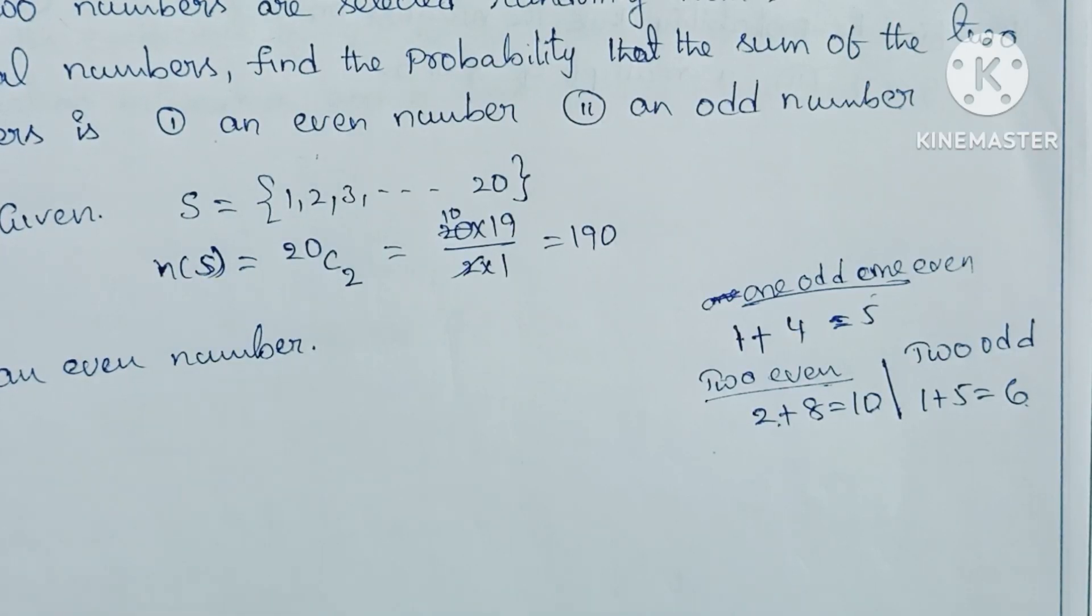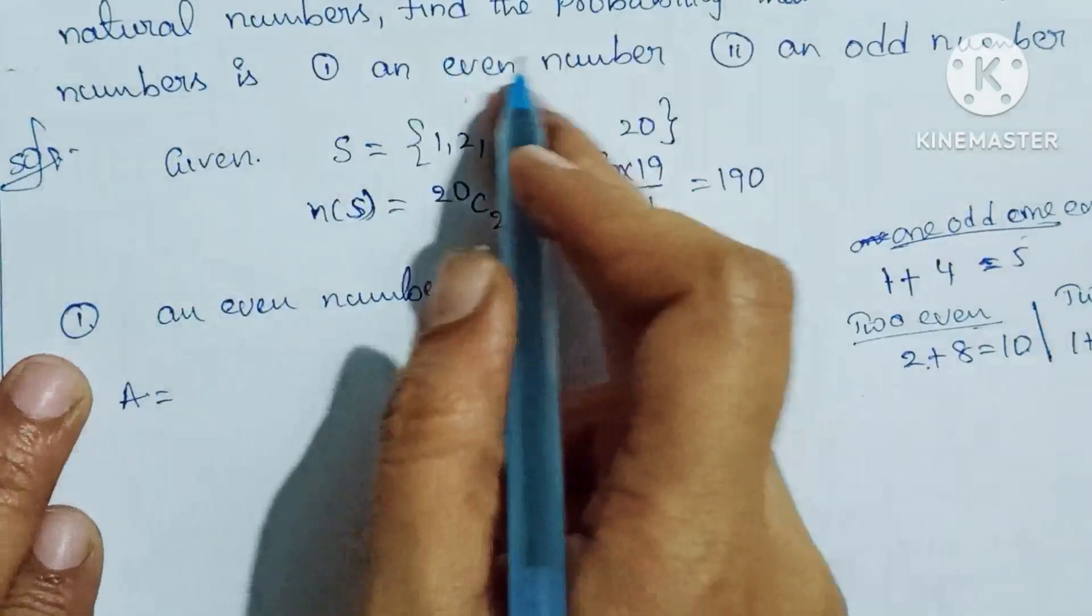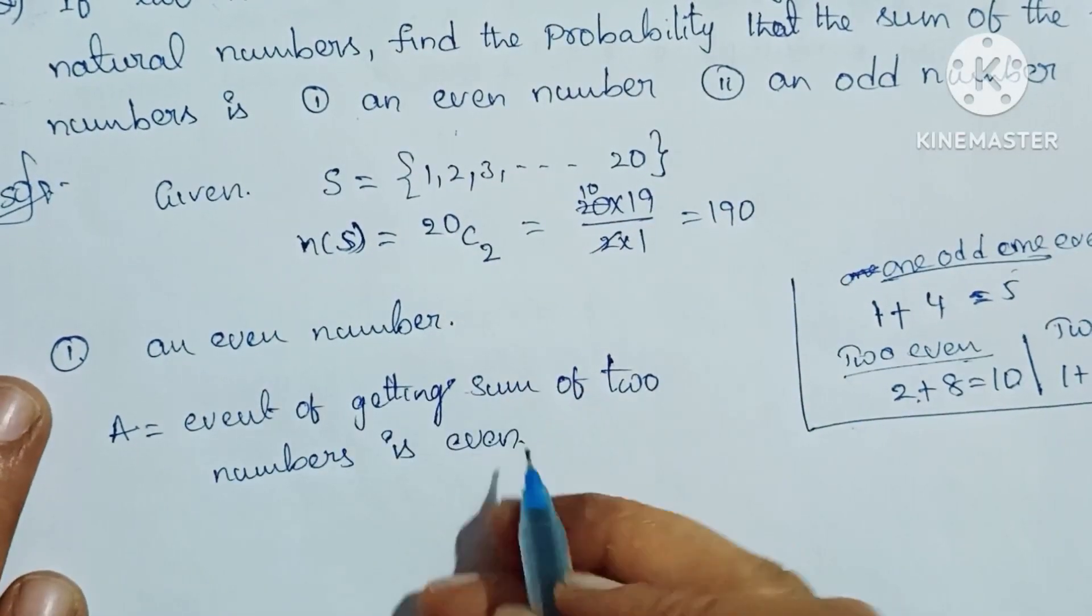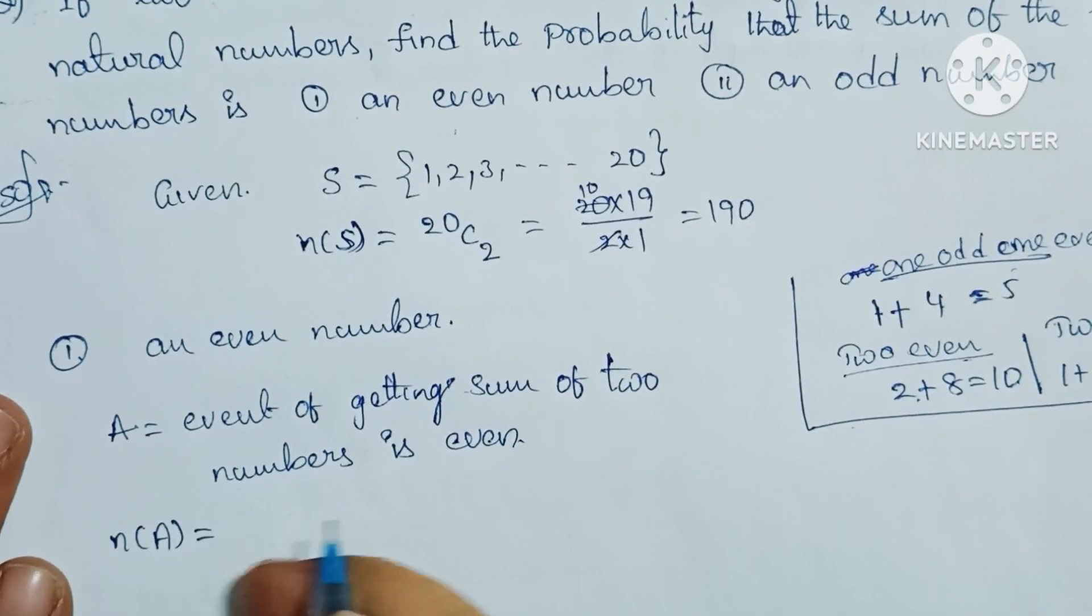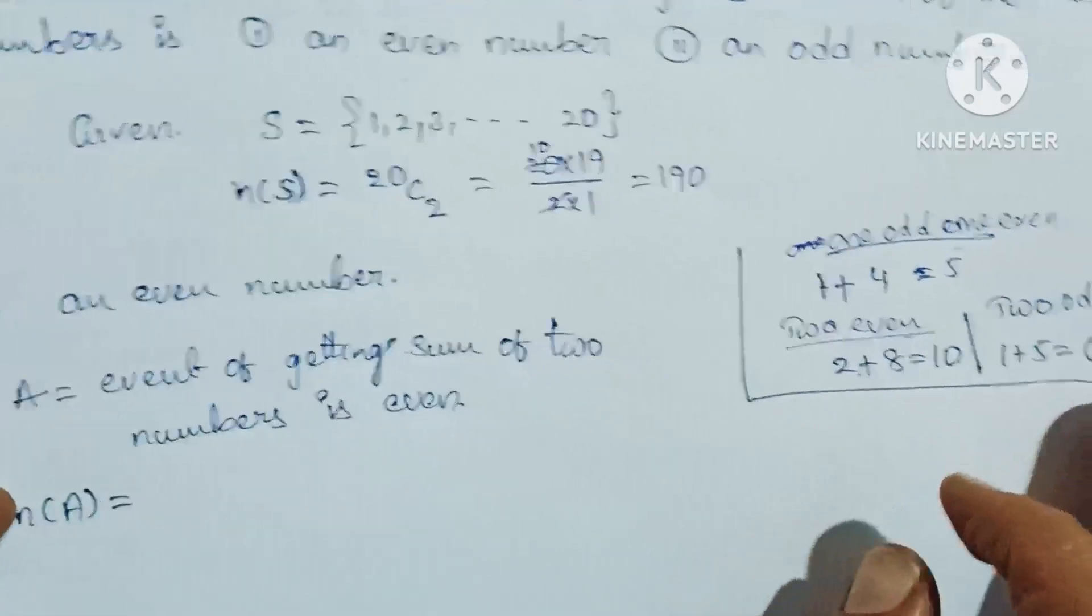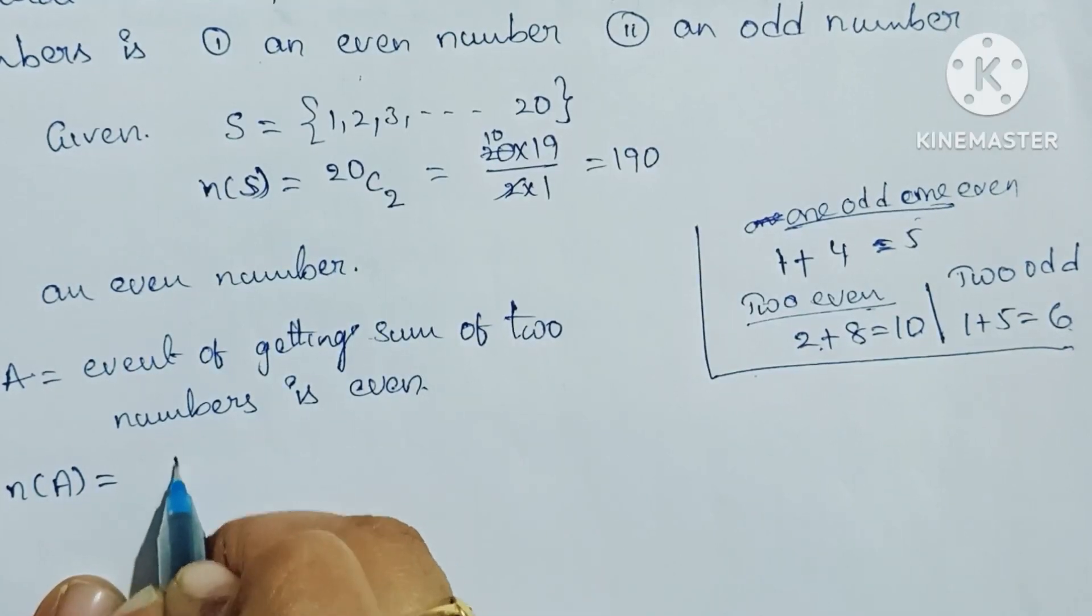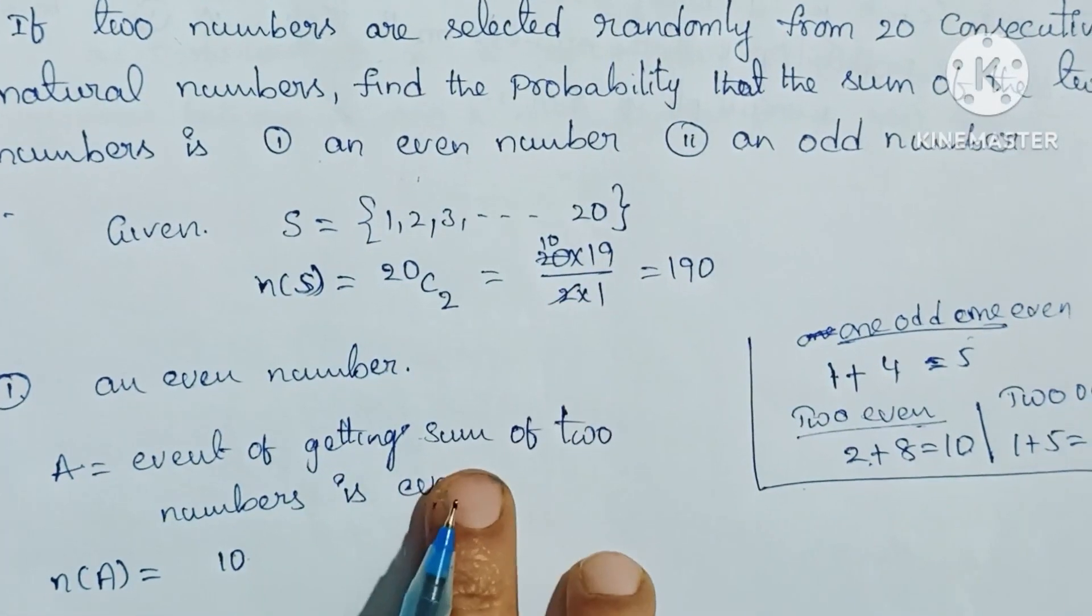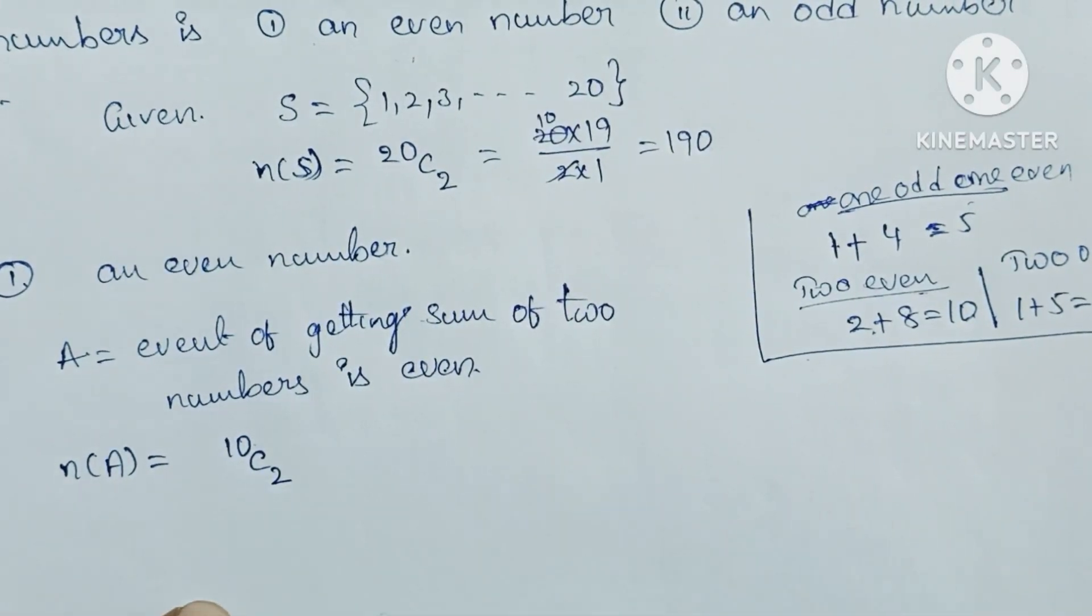So, A equals event of getting sum of 2 numbers is even. That is, A equals event of getting sum of 2 numbers is even. There are 2 possibilities.